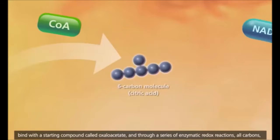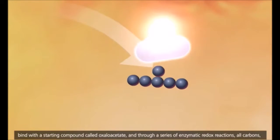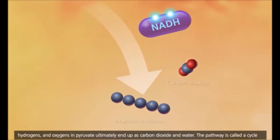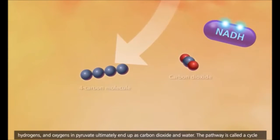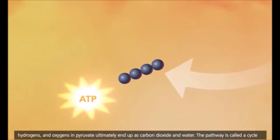In reactions 3 and 4, the energy released in oxidation of carbon molecules is transferred to power the reduction of NAD+ to NADH. Carbon dioxide is released as carbon is oxidized. In reaction 5, ADP is converted to ATP with the use of substrate-level phosphorylation.